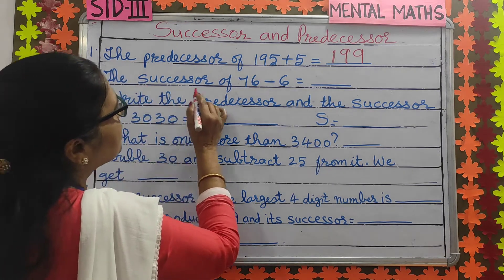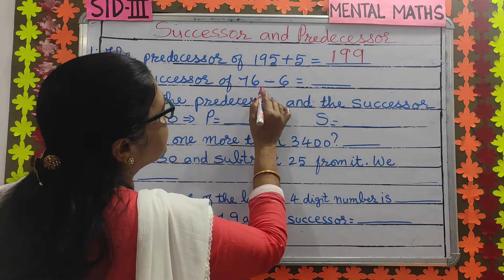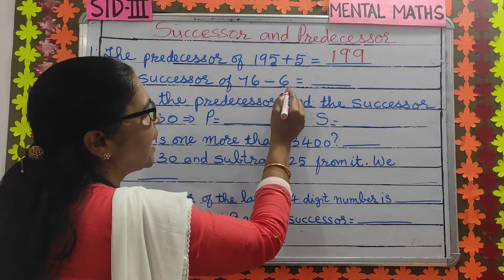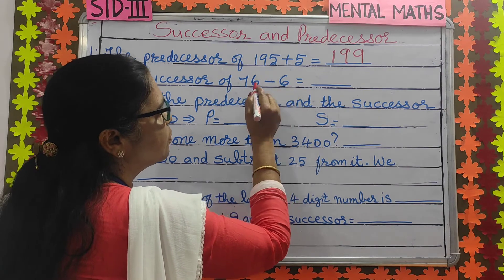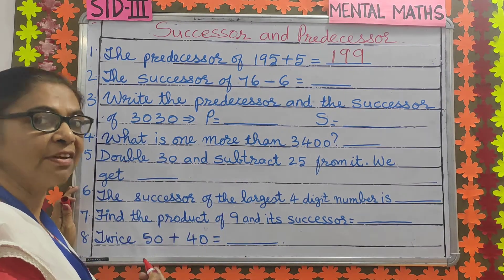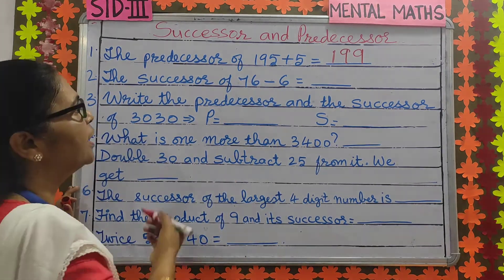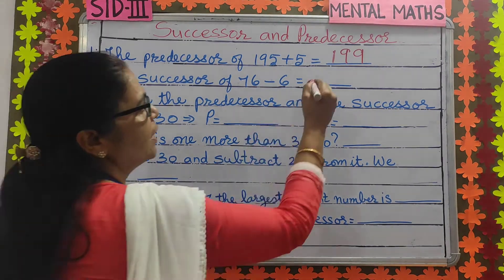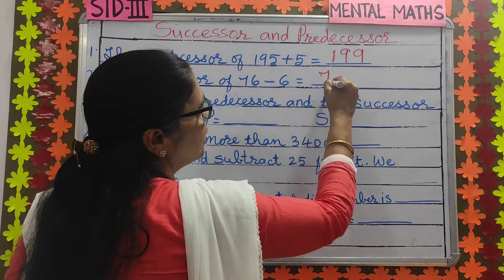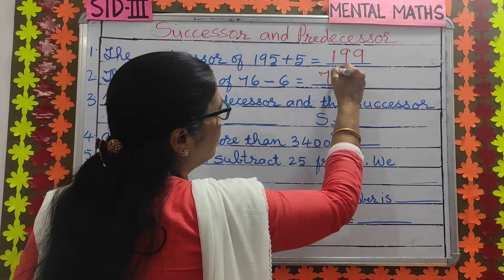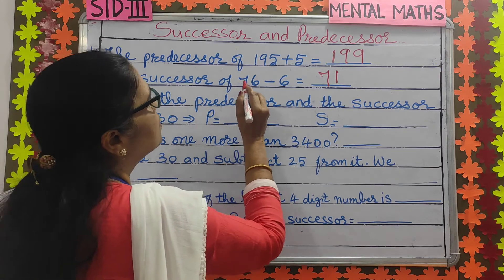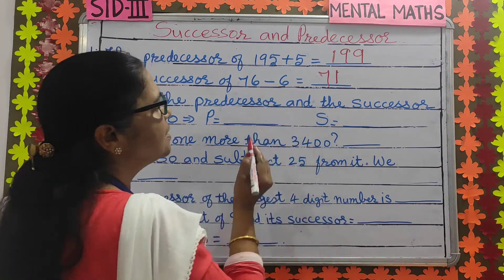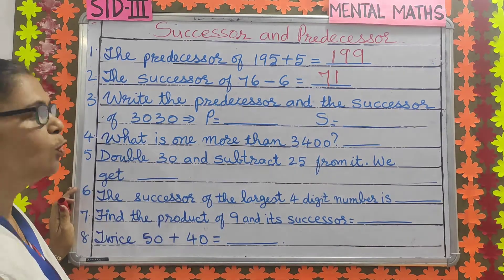Number 2: the successor of 76 minus 6. First, you subtract 6 from 76 to get 70. Then you add 1 to the number to get 71. So the successor of 76 minus 6 is 71.